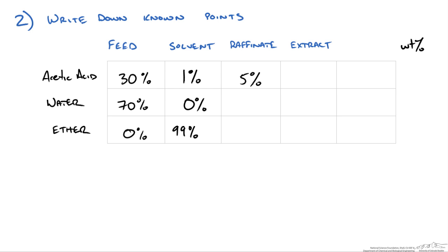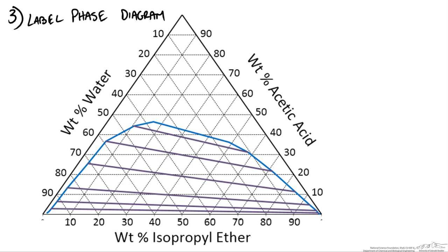We are going to mark these two points on our phase diagram. Based on this phase diagram I like to label our apex points of the triangle. Working up the triangle we go 10, 20, and so forth up to 100% acetic acid. Our water is the bottom left and our ether is the bottom right.